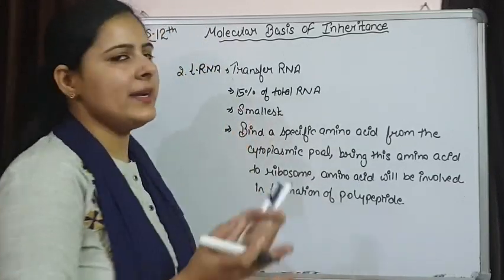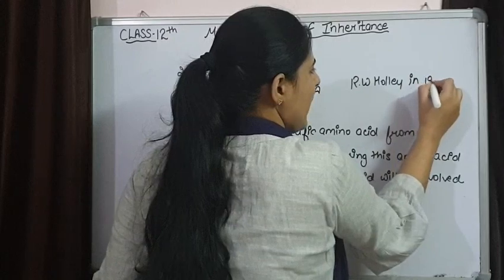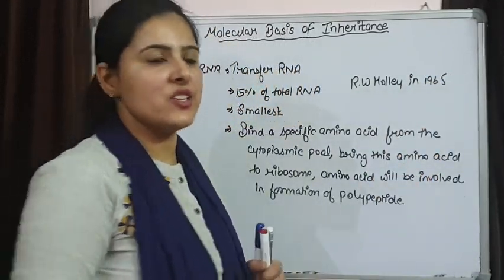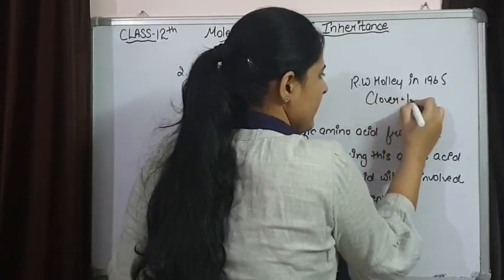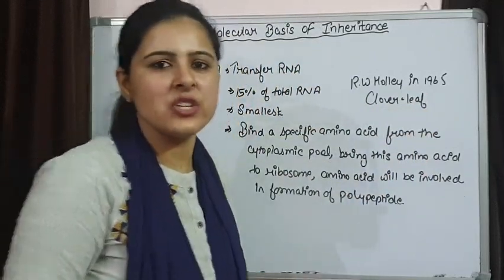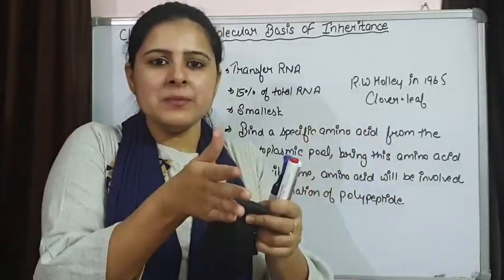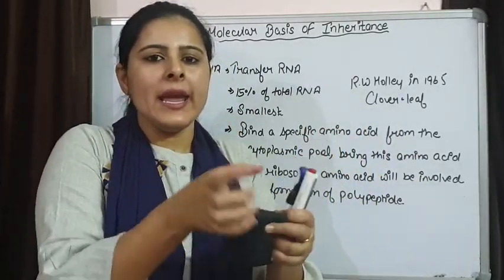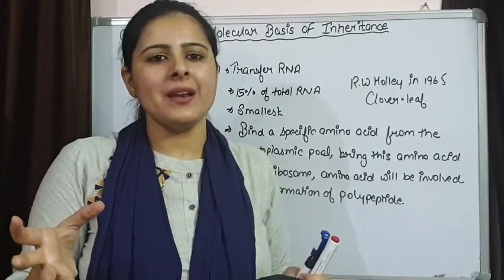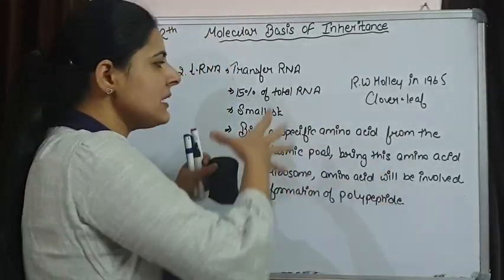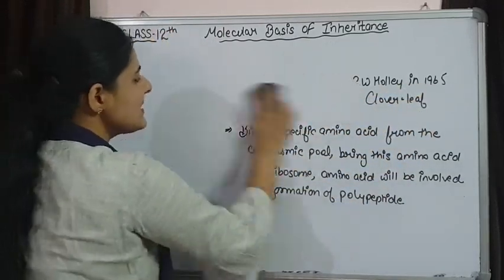There was a scientist who explained the structure — R.W. Holley in 1965 — and he explained its structure and said that it is showing a cloverleaf-like model. This cloverleaf-like structure appears because the strands of tRNA interact with themselves by hydrogen bonding, and some portions will show a double-stranded structure while some portions will appear like loops. The complete structure gives a cloverleaf-like appearance.